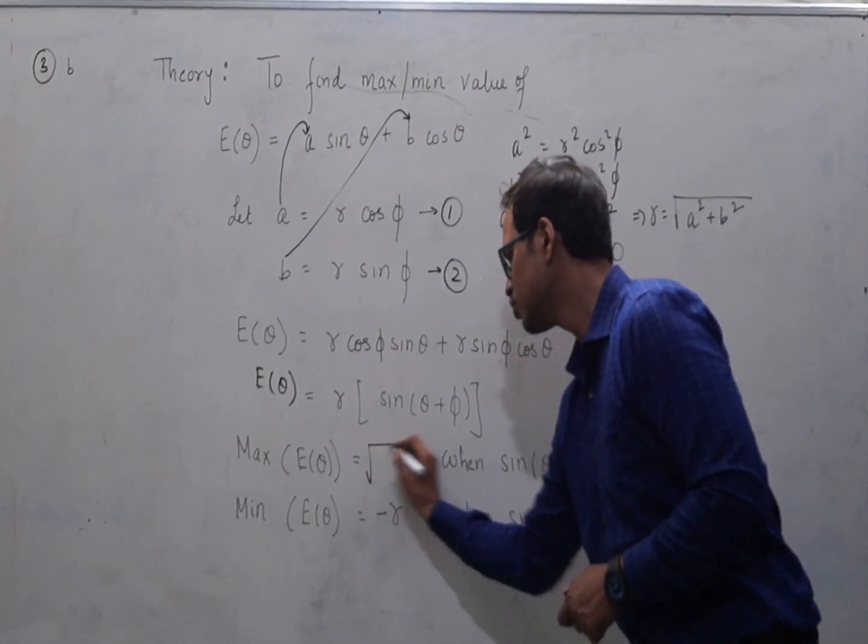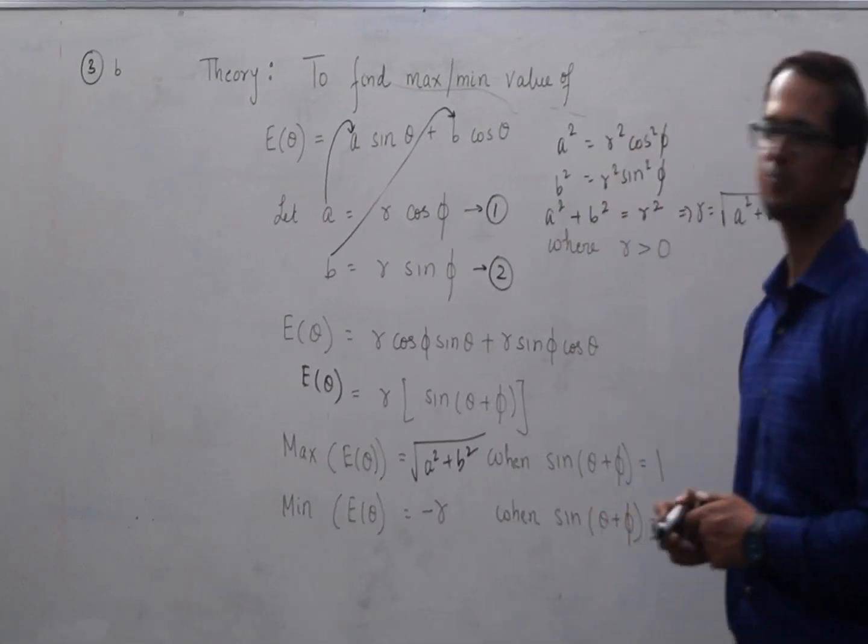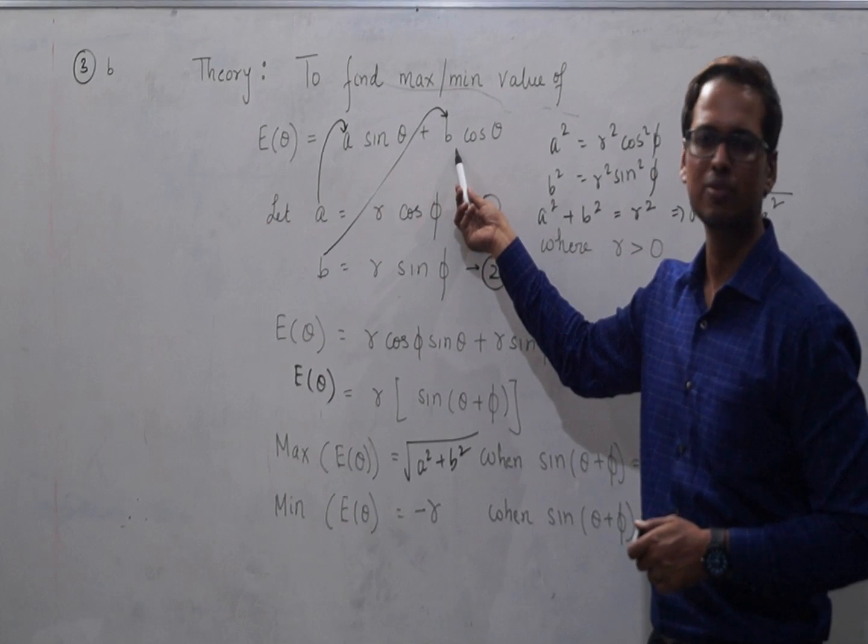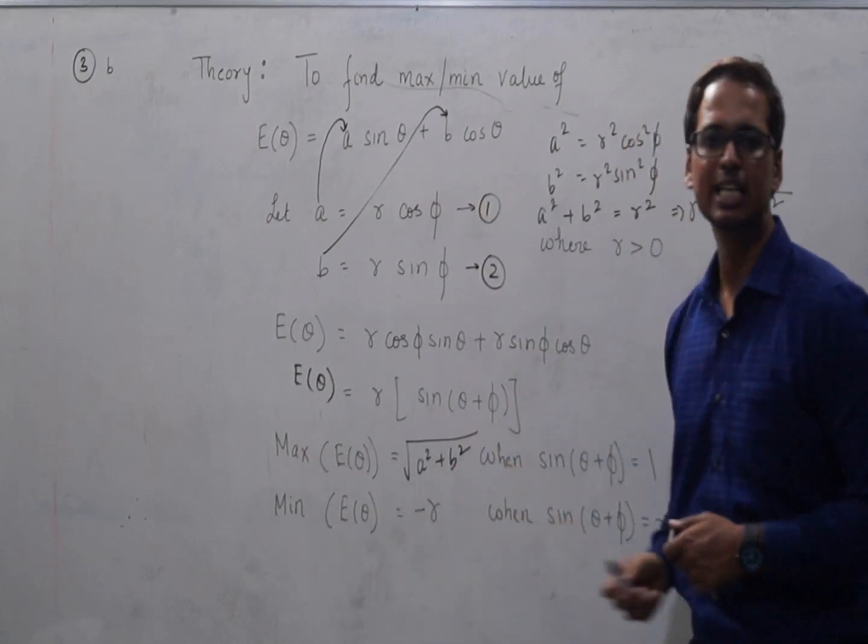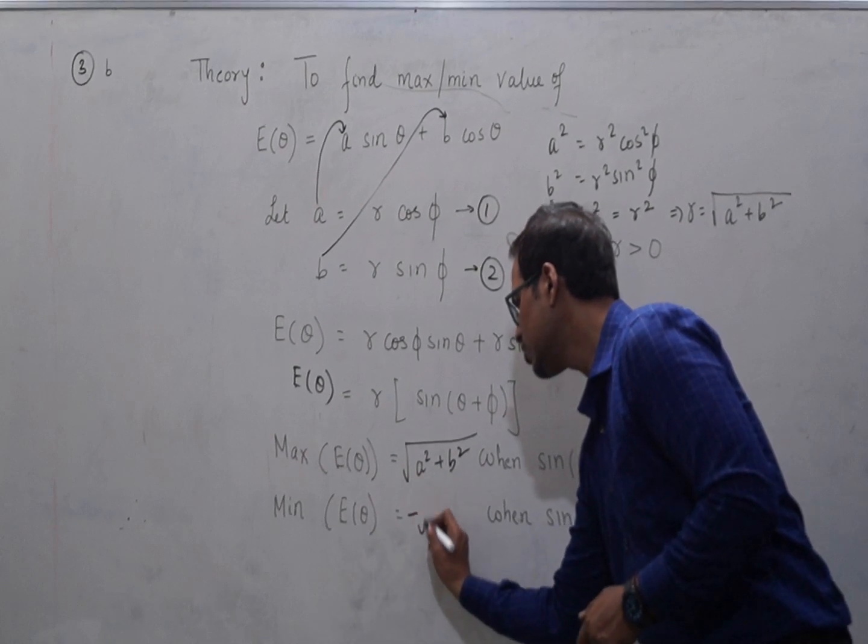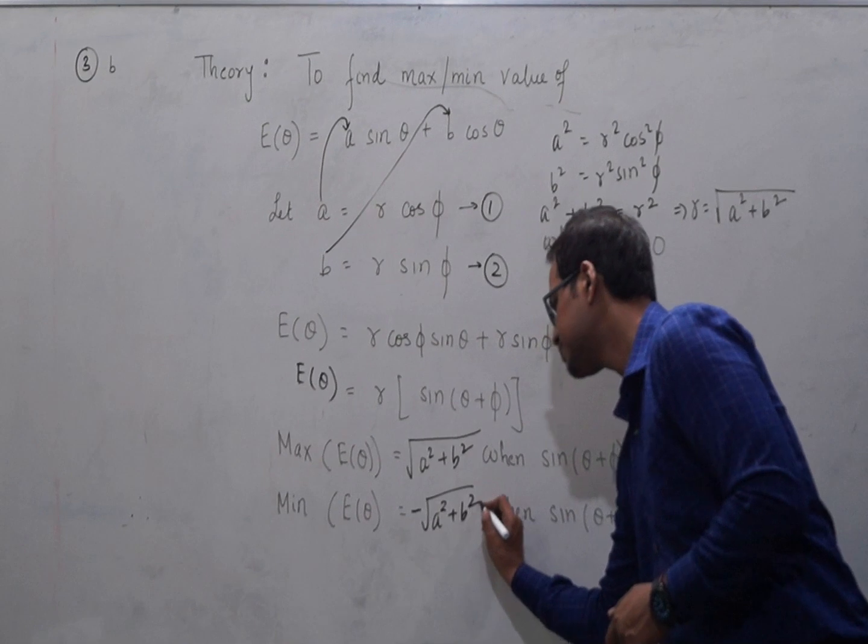So we can say, the maximum value of this expression would be simply square root of a square plus b square. Which is nothing but square of the coefficient of sine theta and square of the coefficient of cos theta added and taken under root. And the minimum value will be the negative of this expression which is minus square root of a square plus b square.